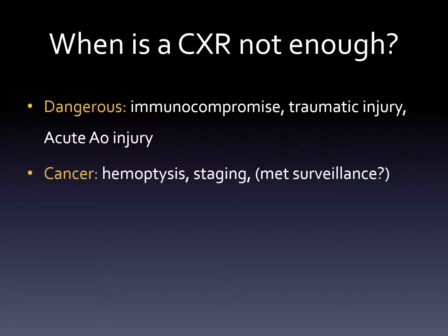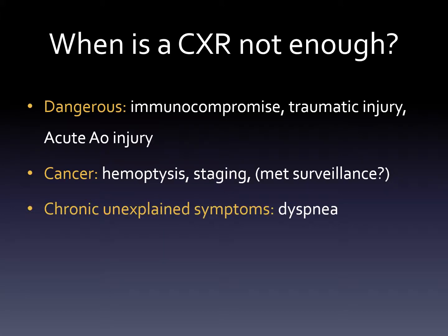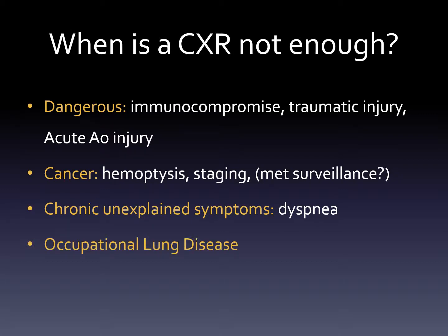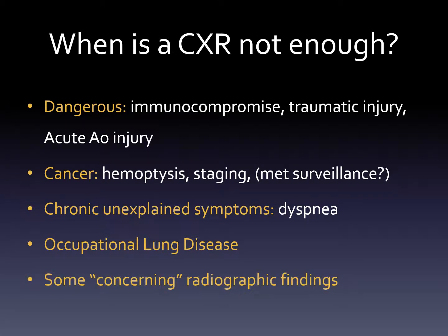CT is the best way to see different places where cancer can spread. Chronic problems where we thought we had an answer, tried treating it, and it didn't cure the symptoms — often a CT is the next step. Certain types of lung disease, for example if patients are exposed to substances as part of their job, or if the radiograph suggests there's something really serious going on, CT is usually the next step.